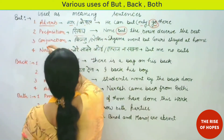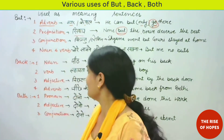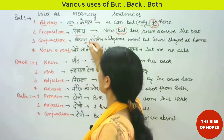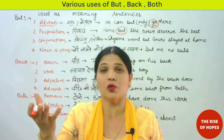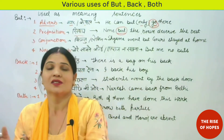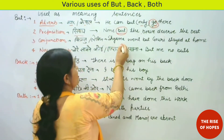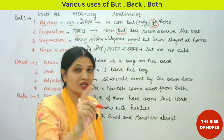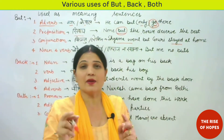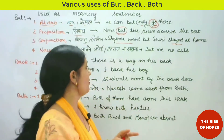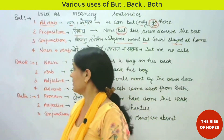Next, 'but' can be used as a conjunction, meaning 'kintu' or 'lekin'. Example: 'Shama went but Gori stayed at home.' Here 'but' connects two clauses — 'Shama went' is one clause and 'Gori stayed at home' is the second clause. By connecting these two clauses, 'but' performs as a conjunction.